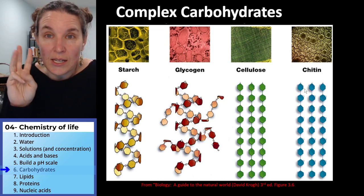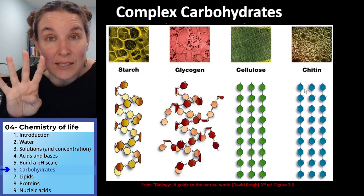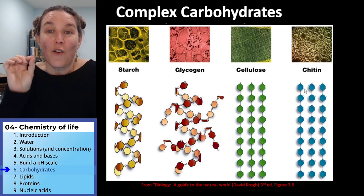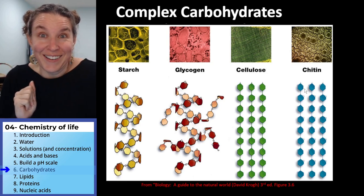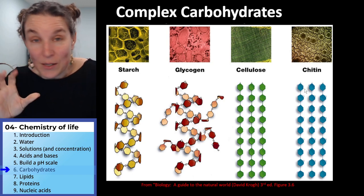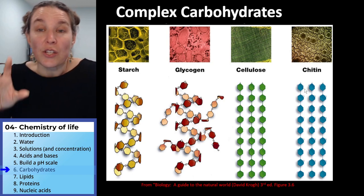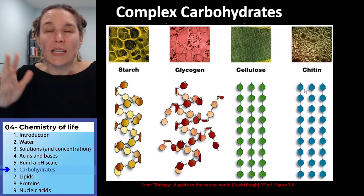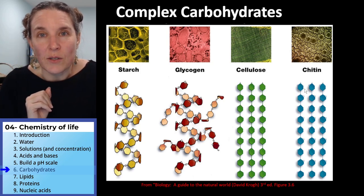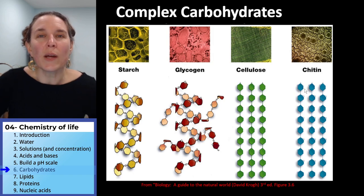Starch, glycogen, cellulose, and chitin are all made from strings of glucose. Nothing more. You string together glucose in one way and you get starch. You string together glucose in another way and you get glycogen. String it together in another way and you get cellulose. And string it together in another way and you get chitin.